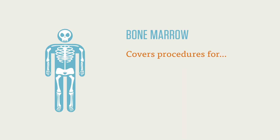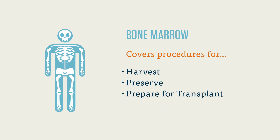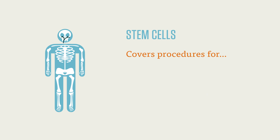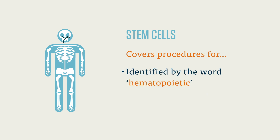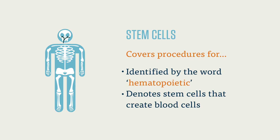Codes for bone marrow include procedures to harvest, preserve, and prepare bone marrow for transplant, as in the case of leukemia sufferers. You can identify stem cells found in bone marrow by the word hematopoietic, which denotes stem cells that create blood cells.